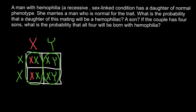Now we know that the daughter must be an obligate heterozygous carrier for this genetic disorder. Let's look at what would happen in the next marriage. We take the female's genotype as one defective X chromosome and one normal X chromosome, so phenotypically she is normal. She marries a man with normal phenotype and normal genotype.